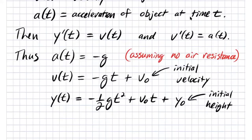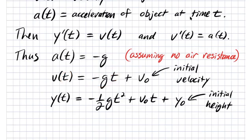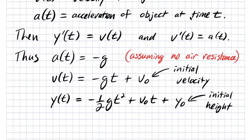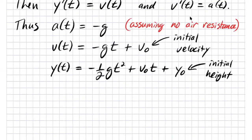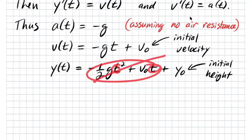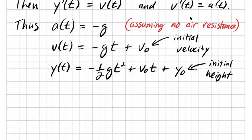Integrating a of t gives v of t equals minus g times t plus v-naught, where v-naught is our initial velocity — plugging in t equals 0 confirms v of 0 equals v-naught. Integrating again gives y of t equals minus one-half g t squared plus v-naught t plus y-naught. Y-naught is the initial height, confirmed by plugging in t equals 0: y of 0 equals y-naught.